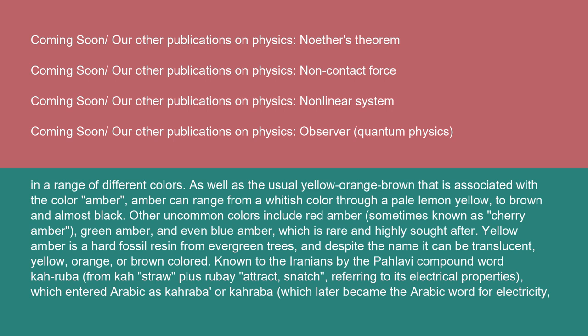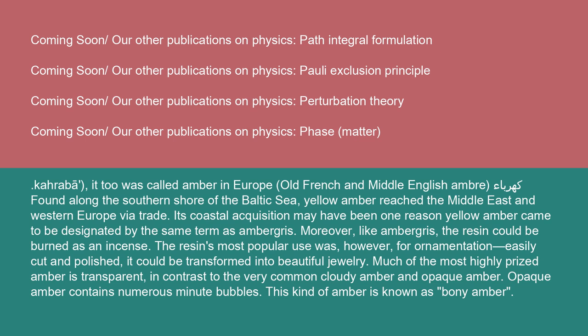Known to the Iranians by the Pahlavi compound word karuba — from ka (straw) plus ruba (attract/snatch), referring to its electrical properties — which entered Arabic as karaba or karaba, which later became the Arabic word for electricity. It too was called amber in Europe in Old French and Middle English. Found along the southern shore of the Baltic Sea, yellow amber reached the Middle East and Western Europe via trade. Its coastal acquisition may have been one reason yellow amber came to be designated by the same term as ambergris. Moreover, like ambergris, the resin could be burned as an incense. The resin's most popular use was, however, for ornamentation — easily cut and polished, it could be transformed into beautiful jewelry.